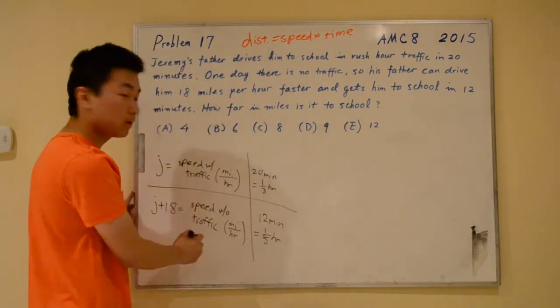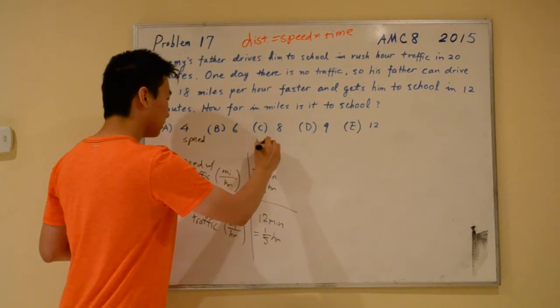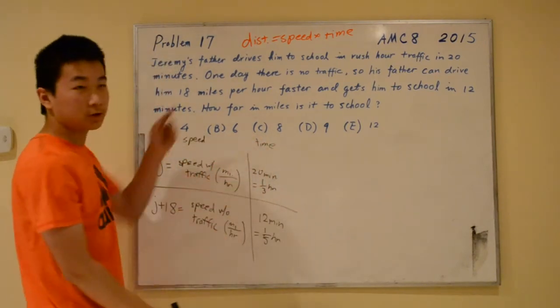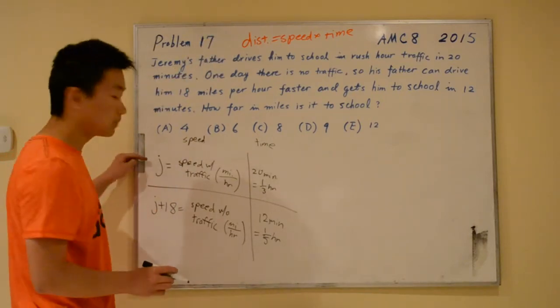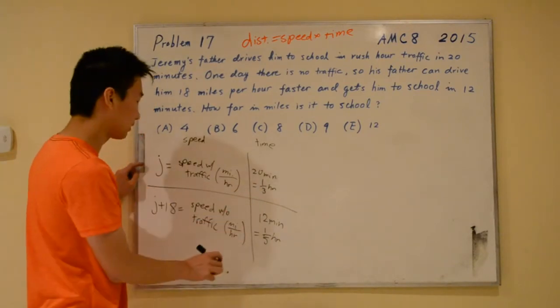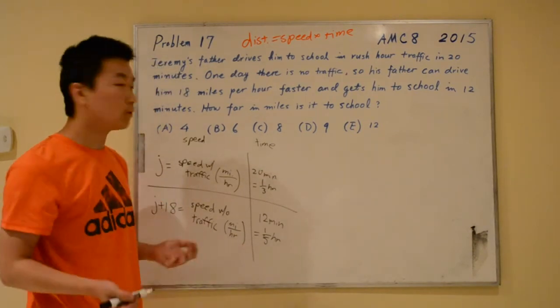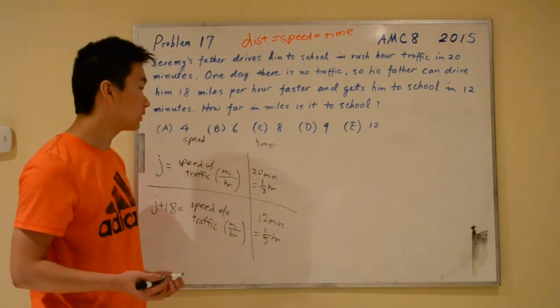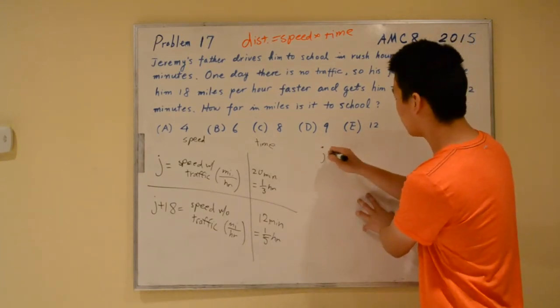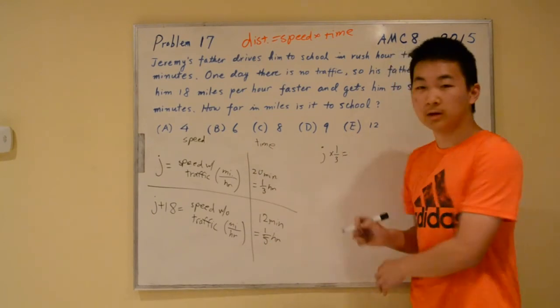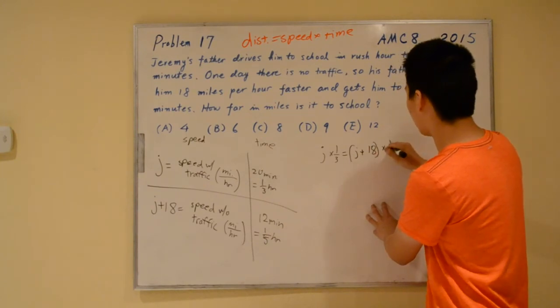This column represents the speed. This column represents the time. If we multiply the speed by the time, we should get the distance. Right now, we have two ways to get to the distance. We can multiply the speed with traffic by the time with traffic, or we can multiply the speed without traffic by the time without traffic. That means we have an equation.